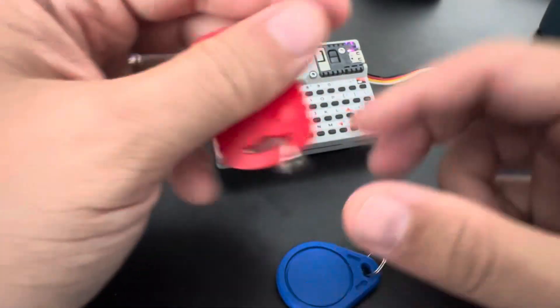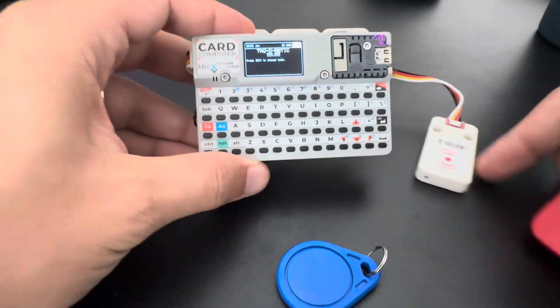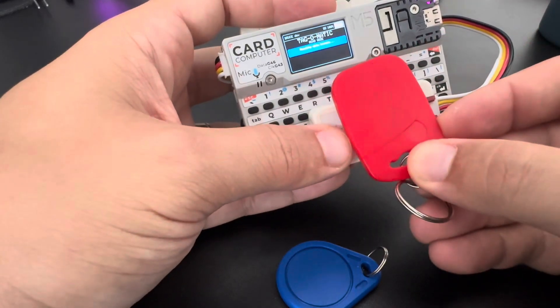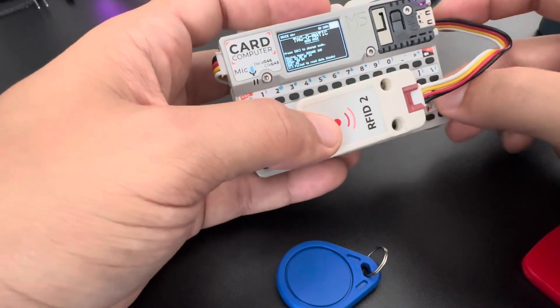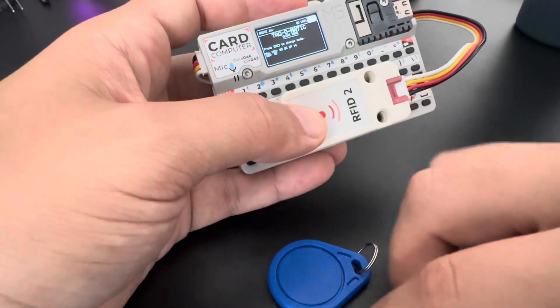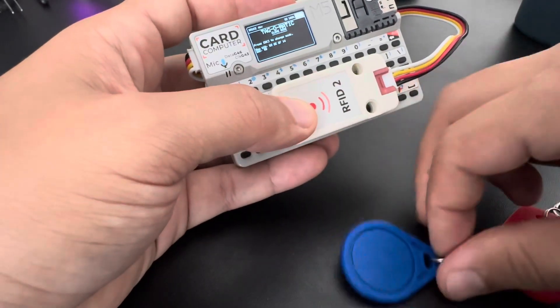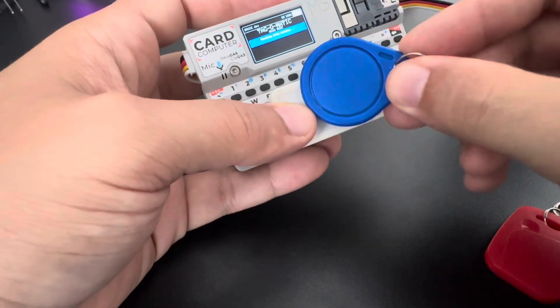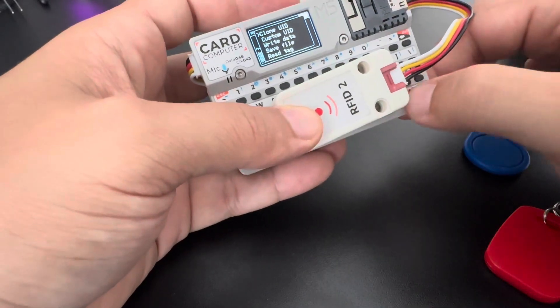So this tag here I can write into block zero, but this tag here I cannot do that. Let me show again. Let me put the reader here. Read the red one, clone, error. Read the blue one, clone,